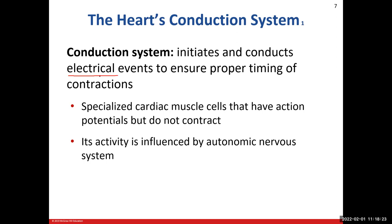We have some specialized cardiac muscle cells that will generate these electrical events — these action potentials. Importantly, they do not contract; they are non-contractile cells. Our conduction system is going to be largely influenced by the autonomic nervous system — sympathetic versus parasympathetic. One speeds up the heart, the other one slows down the heart.